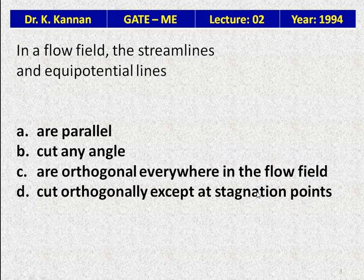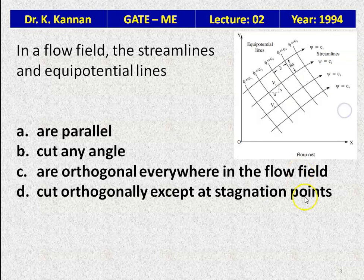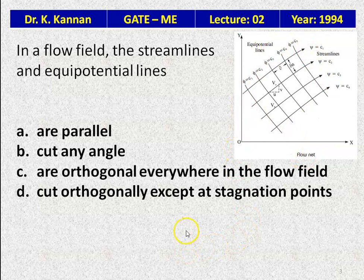In a flow field, the streamlines and equipotential lines are parallel, cut at any angle, or orthogonal everywhere in the flow field, or cut orthogonally except at the stagnation points. Looking at the flow net, the equipotential lines and streamlines meet perpendicularly — orthogonally — everywhere. The correct answer is: streamlines and equipotential lines are orthogonal everywhere in the flow field.